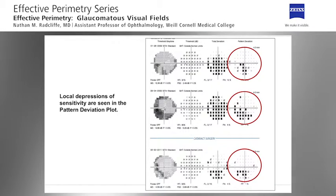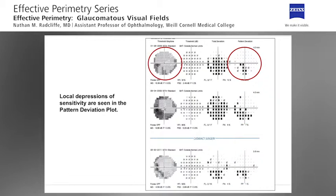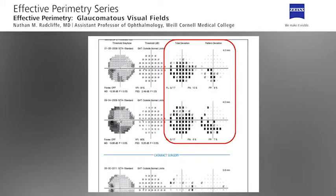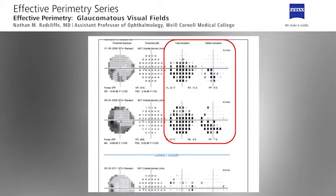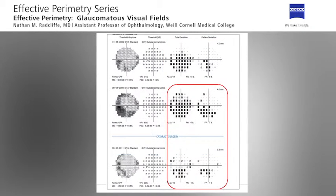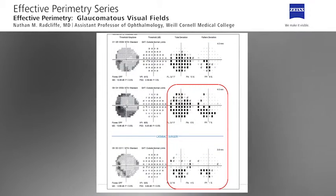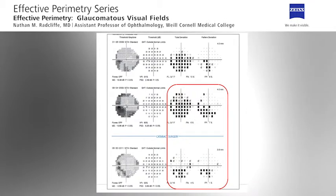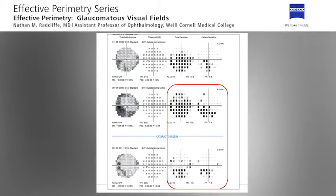Early glaucomatous field loss may develop very gradually over a period of several years. Local depressions of sensitivity will often come and go for quite some time before finally resolving into stable and repeatable defects. The pattern deviation maps will often expose early functional loss before it is visible in grayscale representations. In this example, the patient has clear indications in their first tests of both cataract and glaucomatous visual field loss. Cataract surgery aids in ameliorating the generalized field loss as seen in the total deviation plot, while the localized field loss as seen in the pattern deviation plot remains relatively unchanged.